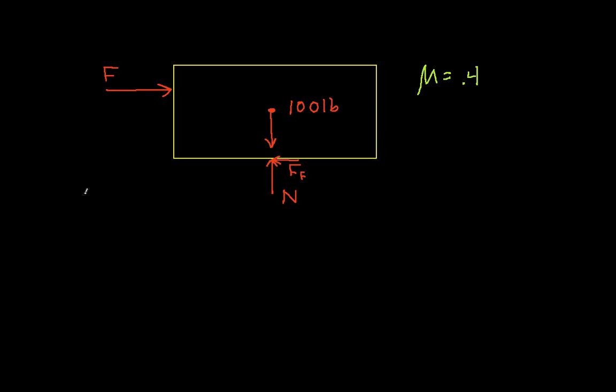We'll do a static analysis. The summation of forces in the y direction is equal to 0. In the y direction we have N pointing up and a 100-pound force pointing down, which tells us the normal force is 100 pounds. This tells us the maximum value for F sub F is 0.4 times 100 pounds, which means the maximum value for F sub F is 40 pounds.